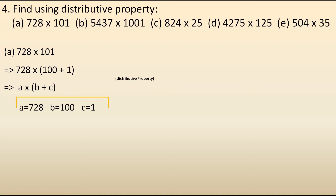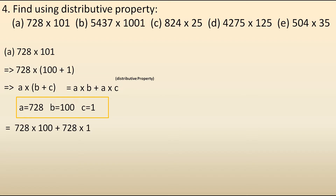Now let's put the values of A, B, C in the second part of the distributive property: A into B plus A into C. So it becomes 728 into 100 plus 728 into 1. For 728 into 100, we multiply 728 by 1 and add two zeros, giving 72,800. And 728 into 1 is 728. Now let's add — we get the answer as 73,528.